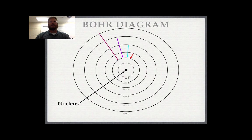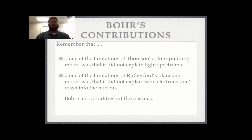The fact that the electrons are moving in their orbits is what is causing the spectral lines. Remember that one of the limitations of Thomson's model and Rutherford's model was that they could not explain the spectral lines or they could not explain why electrons are not crashing into the nucleus. Bohr's model addresses both of those issues.